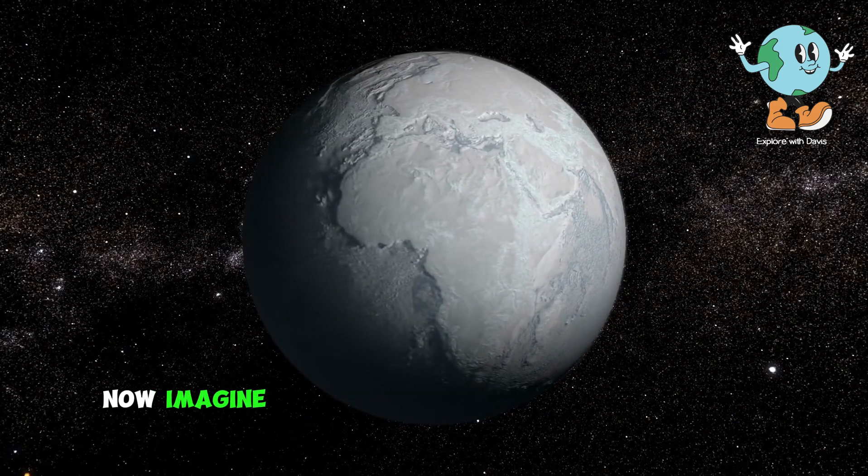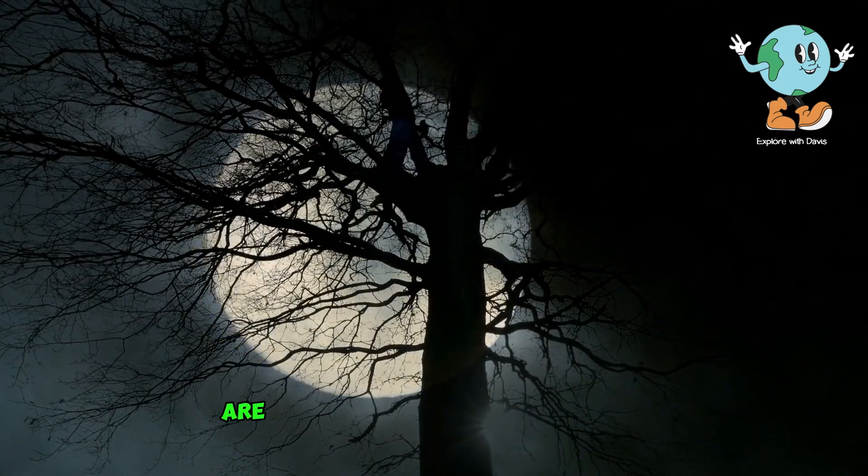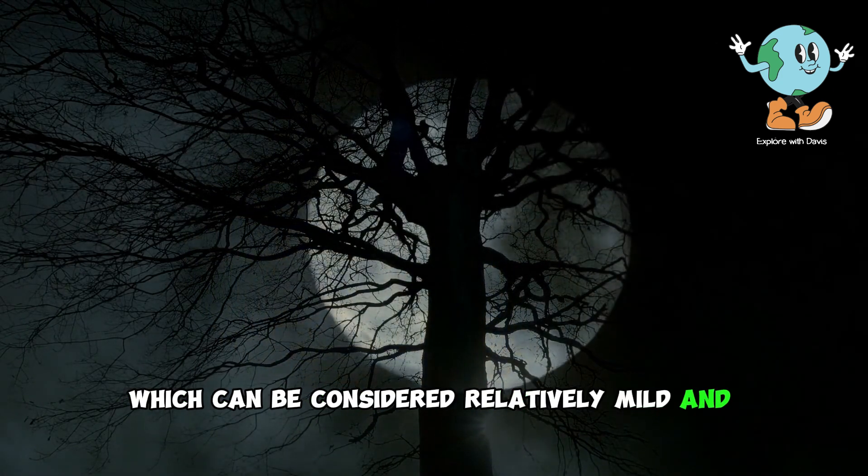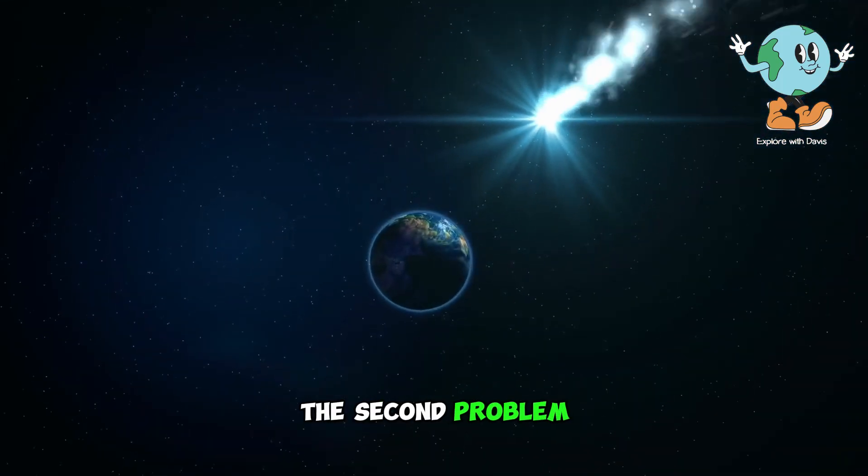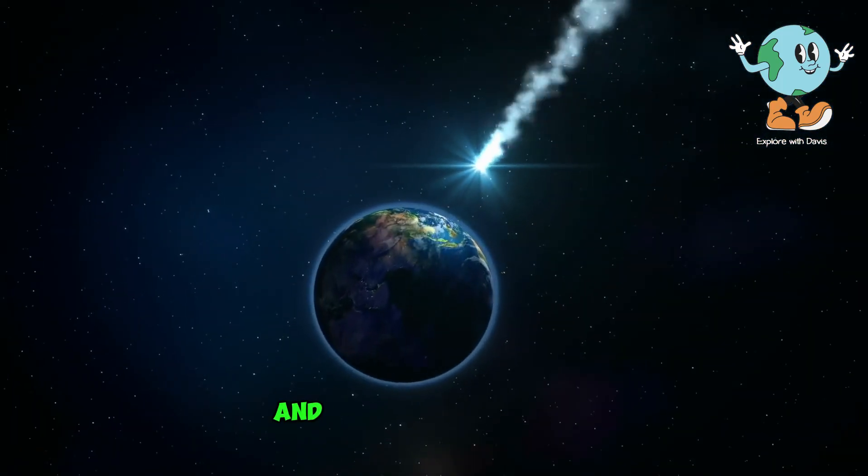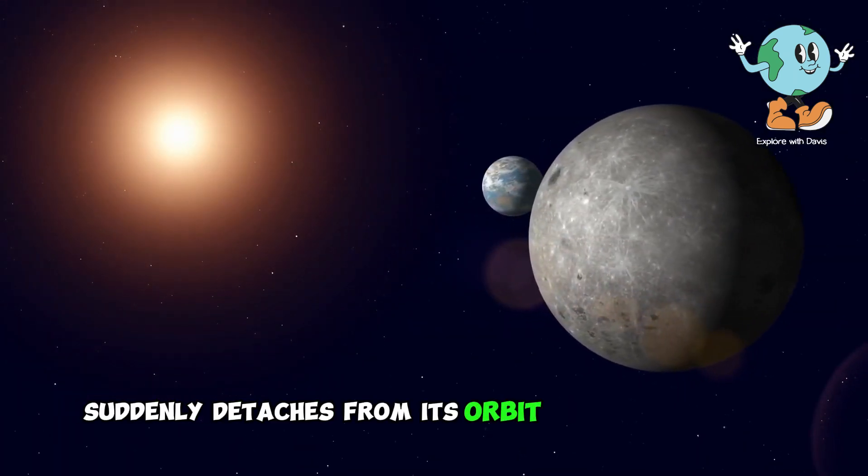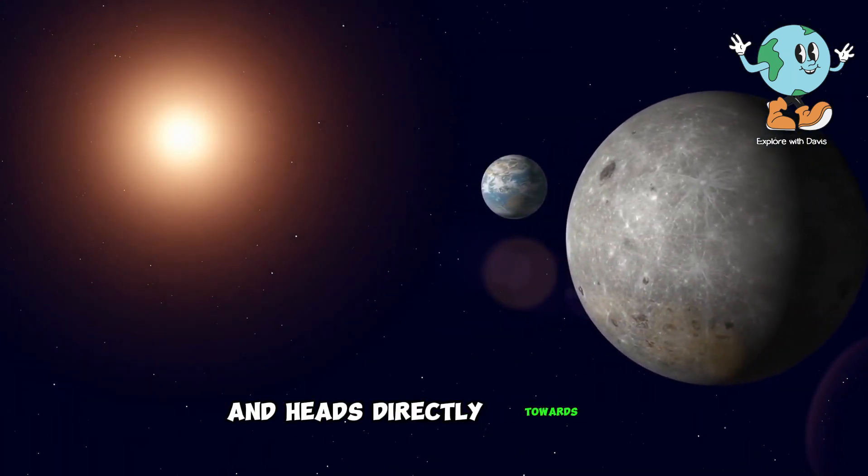Now imagine that everything we've discussed so far are just the indirect causes of the moon's disappearance, which can be considered relatively mild and pleasant. But what about the direct consequences of a collision? The second problem, which would be a direct consequence and in itself a disaster, arises when the moon suddenly detaches from its orbit around Earth and heads directly towards it.